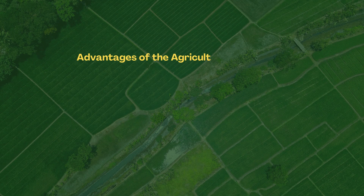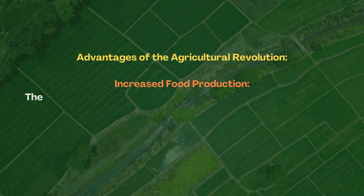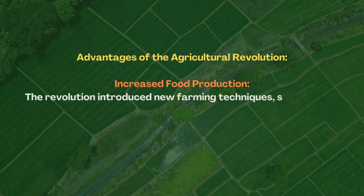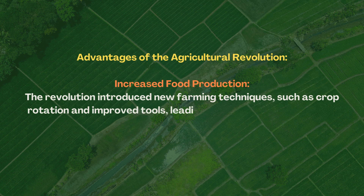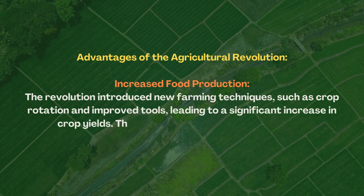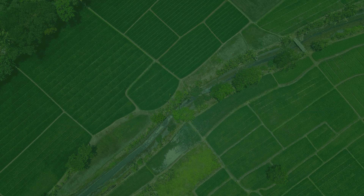Advantages of the Agricultural Revolution. Increased Food Production: The revolution introduced new farming techniques, such as crop rotation and improved tools, leading to a significant increase in crop yields. This helped support larger populations.